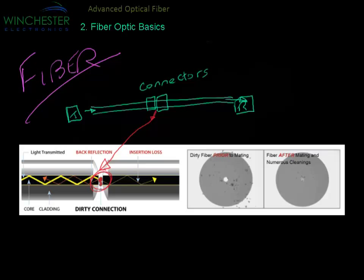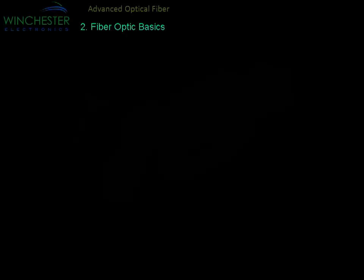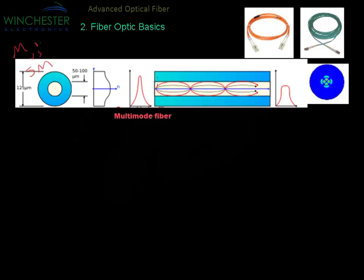This causes a high loss and causes the link to fail. Looking at the two types of fiber — multi-mode versus single-mode — for multi-mode, the core of the fiber where the light is passing is much larger than on single-mode. On single-mode, you can see the core is quite small, around 10 microns.